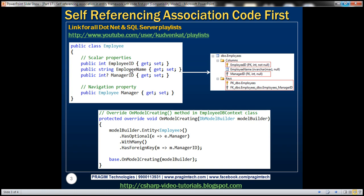That's why we have three scalar properties with the same names as the columns: EmployeeID, EmployeeName, and ManagerID. In addition to these scalar properties, we also have a Manager navigation property, which returns an Employee — because the manager of an employee is also an employee. For Entity Framework to generate this self-referencing table, we need to override the OnModelCreating method, where we programmatically specify the self-referencing association.